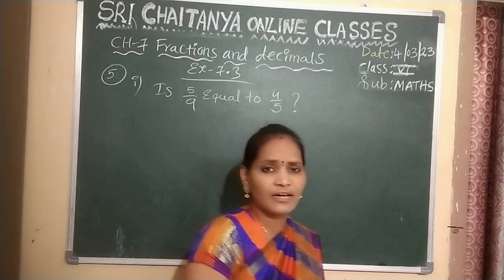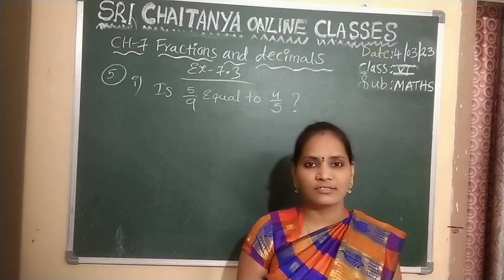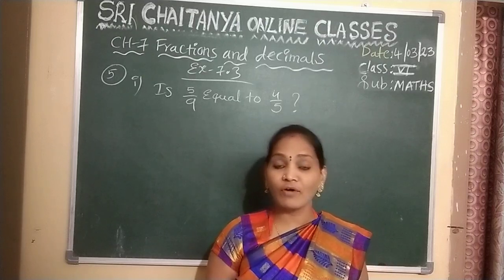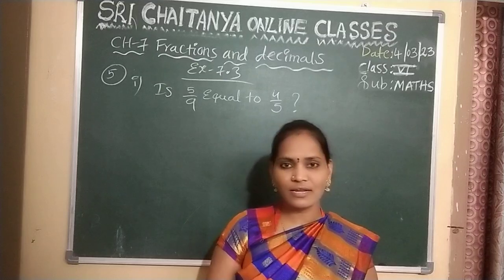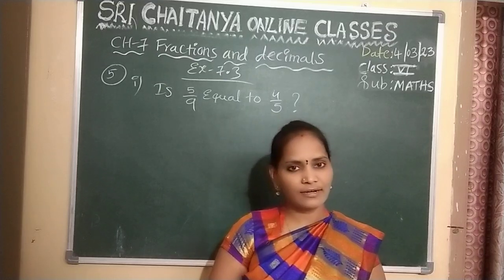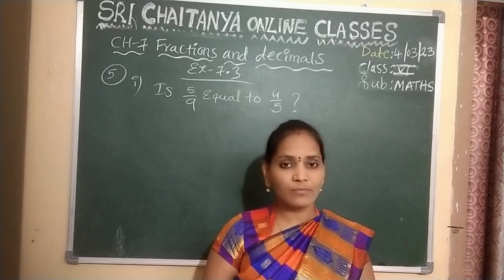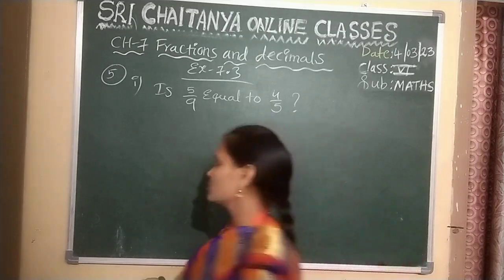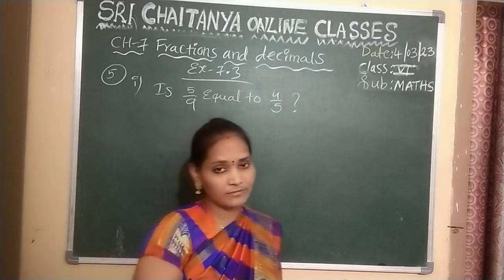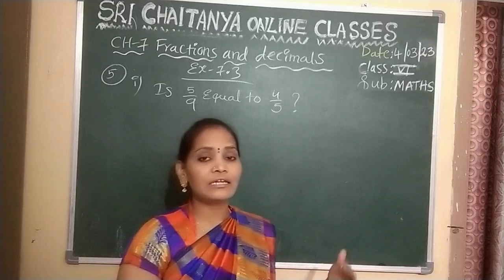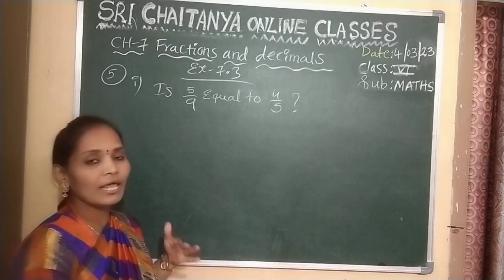Can we say directly by seeing those numbers whether they are equal or not? No, we can't say. Why can't we say? Because those are unlike fractions. By seeing the numbers, we can't say directly which is smaller, which is greater, or whether both are equal or not. So then what we should do? How can we say whether the two numbers are equal or not? First, we can make them into like fractions.